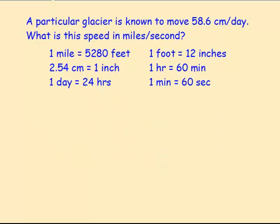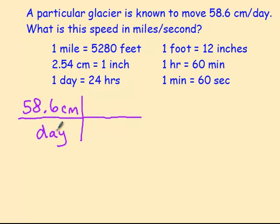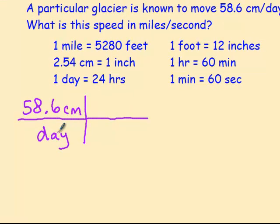A particular glacier is known to move 58.6 centimeters per day. What is that speed in miles per second? I made it miles per second instead of hours just so we have an extra conversion. 58.6 centimeters per day. Per day. Divided by days.